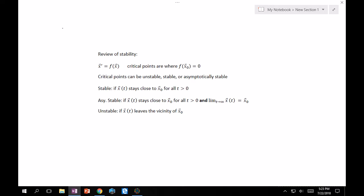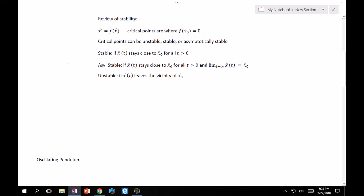They're stable if the solution x of t stays close to that critical point x naught for all t greater than zero. It's asymptotically stable if it holds that same definition for stability, so x of t has to stay close to it for all t greater than zero, and the limit as t approaches infinity of your solution must be x₀. That's the main distinction. For this class, it's okay to say that asymptotic stability is kind of like a stronger version of stability. Finally, unstable is if x of t leaves the vicinity of x naught.